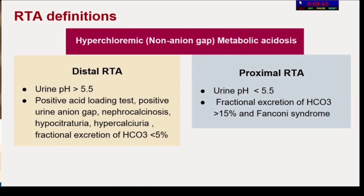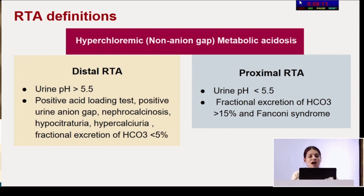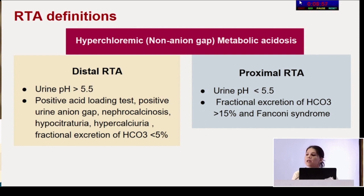For RTA definitions, both distal and proximal RTA are characterized by hyperchloremic non-anion gap metabolic acidosis. Distal RTA is characterized by urinary pH greater than 5.5, while proximal RTA shows urine pH less than 5.5. Supporting findings for distal RTA include positive acid loading test, positive urine anion gap, nephrocalcinosis, hypocitraturia, hypercalciuria, and fractional excretion of bicarbonate less than 5%. Proximal RTA is supported by fractional excretion of bicarbonate greater than 15% and presence of Fanconi's syndrome.